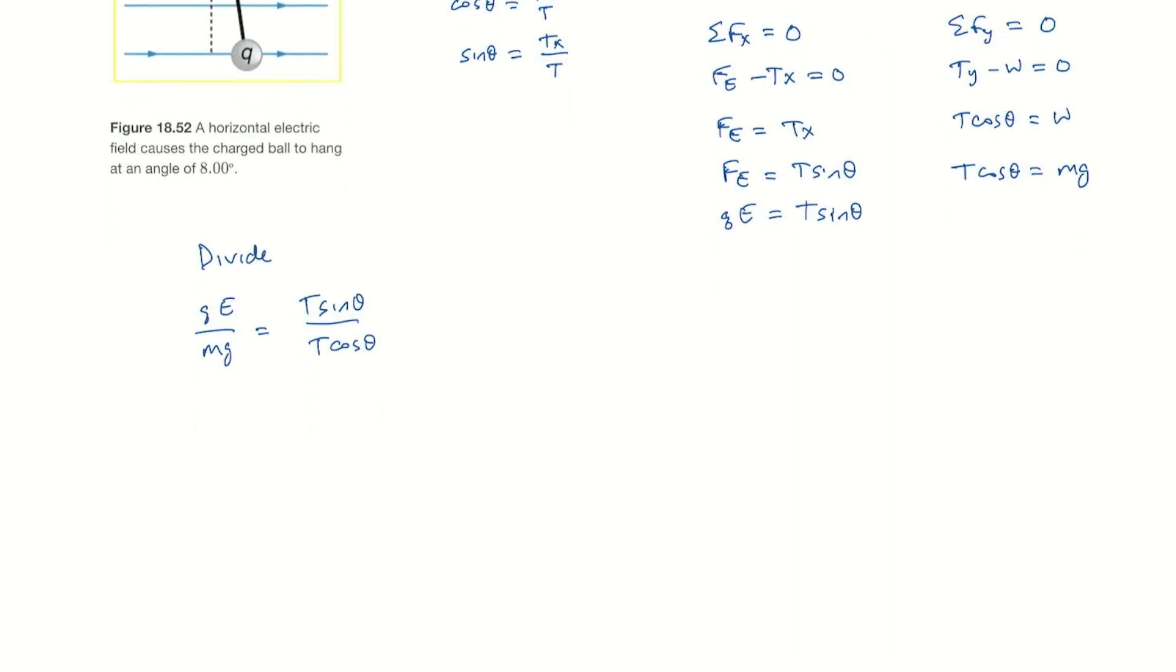So I'll get rid of our t's. We can multiply by mg over q for both sides, so mg over q.